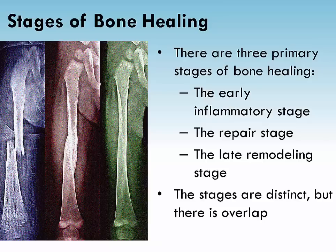Bone production begins when the clotted blood formed by inflammation is replaced with fibrous tissue and cartilage, known as soft callus. As healing progresses, the soft callus is replaced with hard bone, known as the hard callus, which is visible on x-rays several weeks after the fracture.